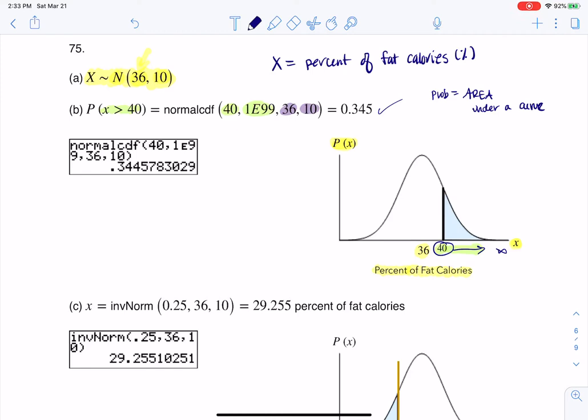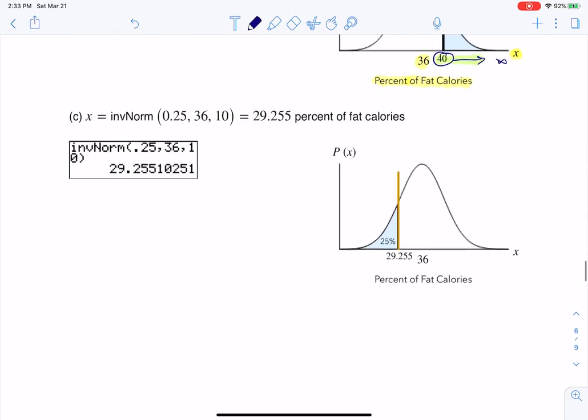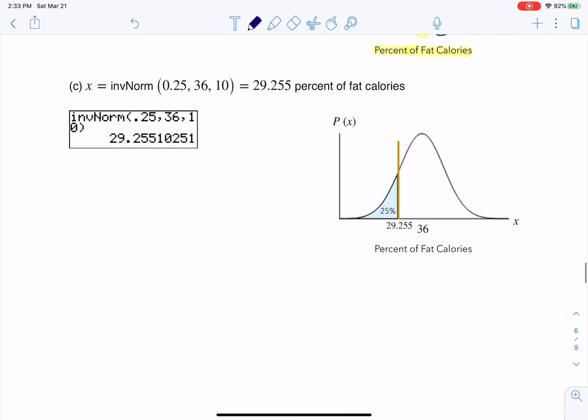All right. And part C says find the maximum number for the lower quarter of percent of fat calories. So we basically want the 25th percentile because it asked us for the lower quartile. So if I want the bottom 25%, let me put here, this is the 25th percentile.